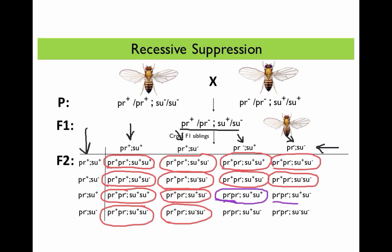Similarly, a fly with no purple gene product and one wild type copy of the suppressor gene will also have purple eyes. Now, the double mutant fly — homozygous mutant for both the purple mutation and the suppressor mutation — has the suppressor mutation reverse the phenotype of the purple mutation, causing this double mutant fly to be red or phenotypically wild type.